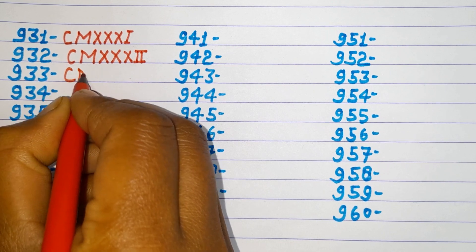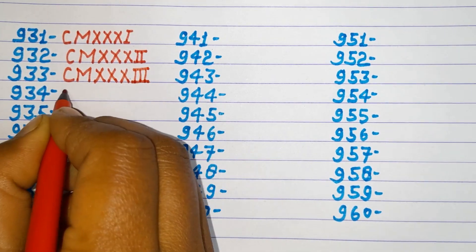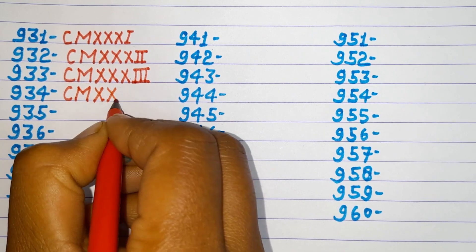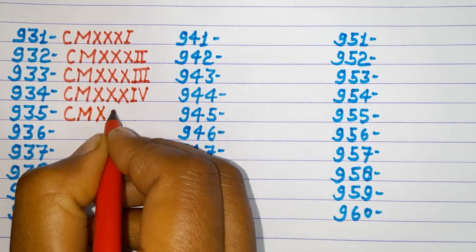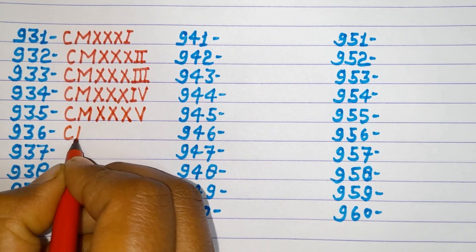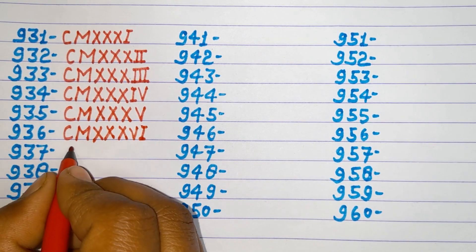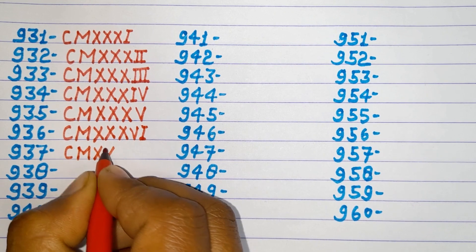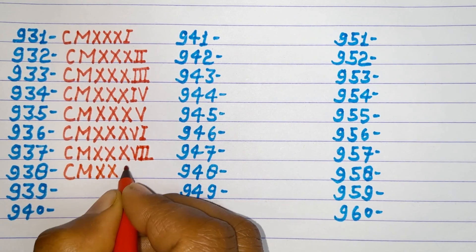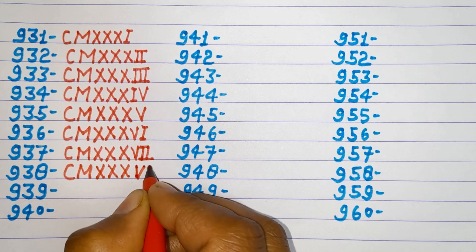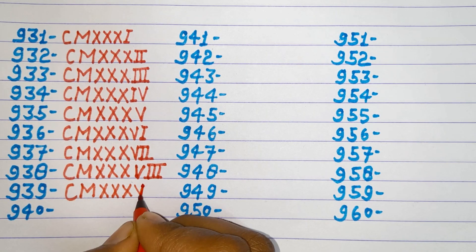933 CMXXXIII, 934 CMXXXIV, 935 CMXXXV, 936 CMXXXVI, 937 CMXXXVII, 938 CMXXXVIII, 939 CMXXXIX.